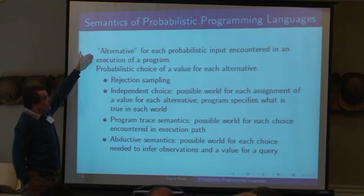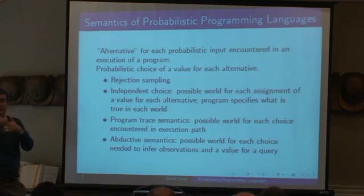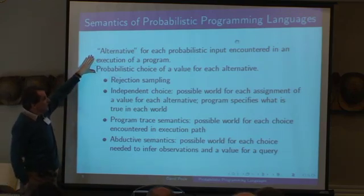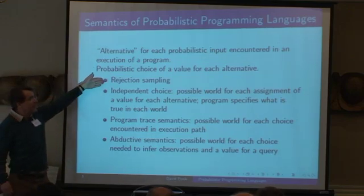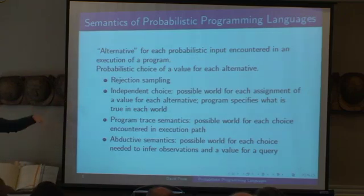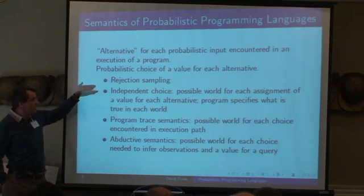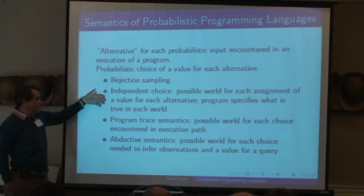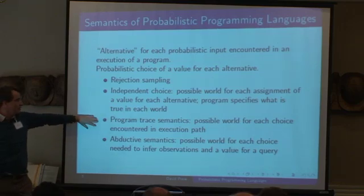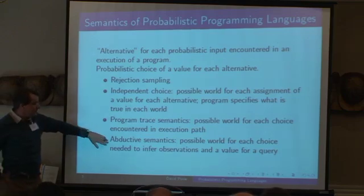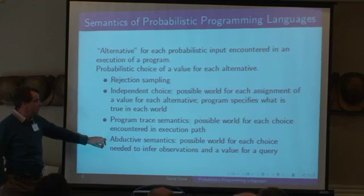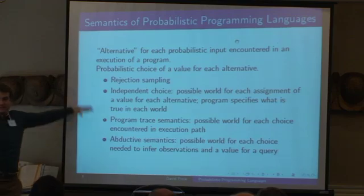For each probabilistic input encountered in the execution of a program, there's what we call an alternative — one is chosen by the program with a probabilistic choice. That's why we call this the probabilistic choice semantics. There are a few semantics which all coincide. First, rejection sampling semantics, just like in Simula. Second, independent choice semantics: there's a possible world for each assignment of a value to each alternative. Third, a program trace semantics: there's a possible world for each choice encountered in each execution path. Fourth, an abductive semantics: a possible world is basically the minimal set of assumptions needed to infer the observations and the value for a query. It turns out these can all be shown to be the same.